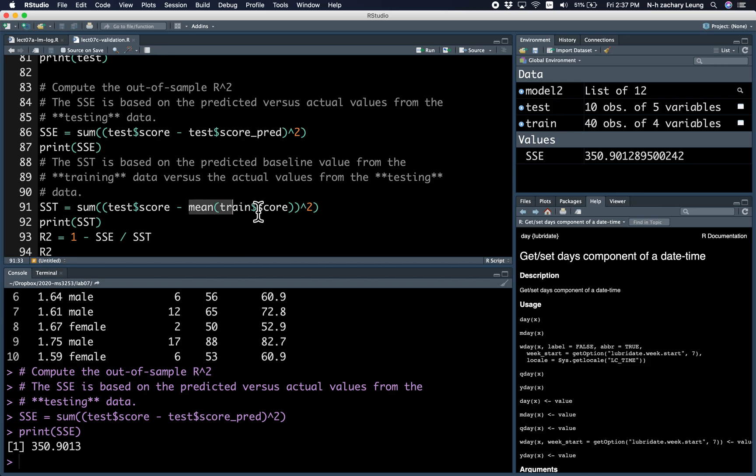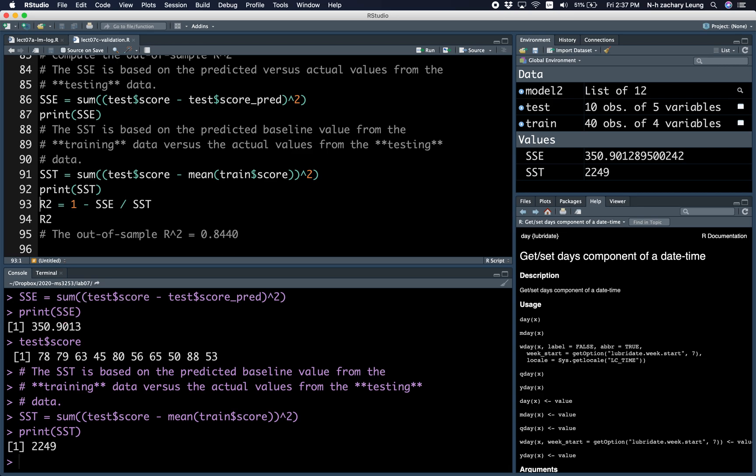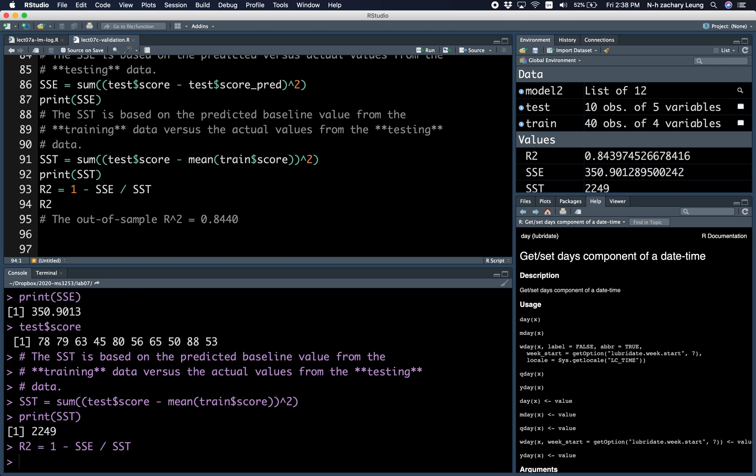So, we use the mean of the training scores compared with the actual values of the testing scores. And then the R-squared is just given by the formula 1 minus sum of square errors divided by total sum of squares.